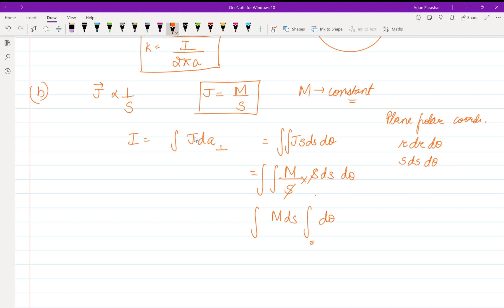The limits are 0 to 2π for full circle, and S is from 0 to a, since radius is a. So I is equal to M into a into 2π. So from here we get M is equal to I upon 2πa.